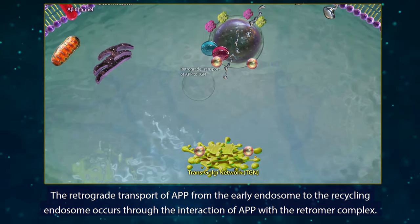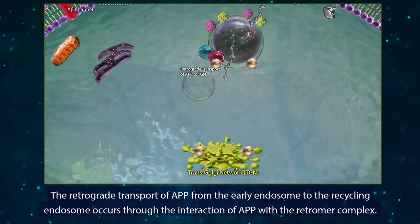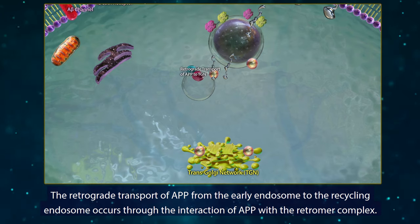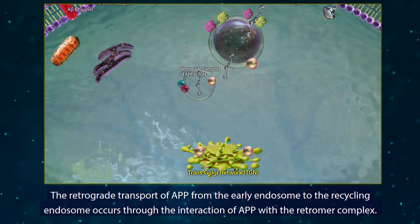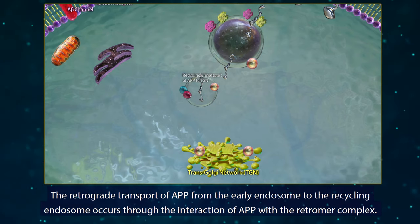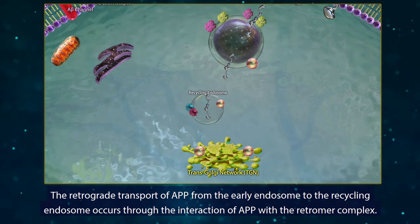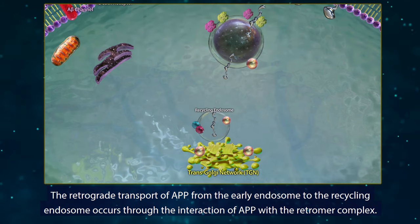The retrograde transport of APP from the early endosome to the recycling endosome occurs through the interaction of APP with the retromer complex.